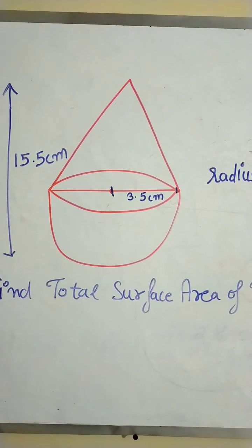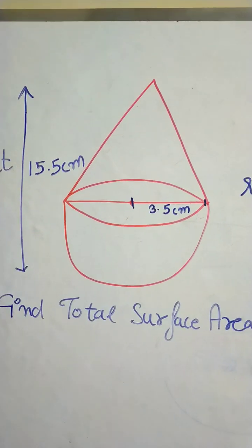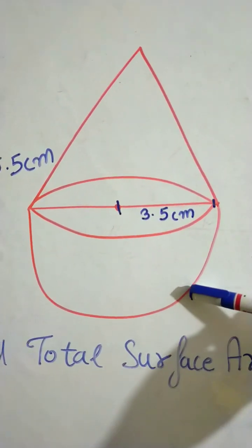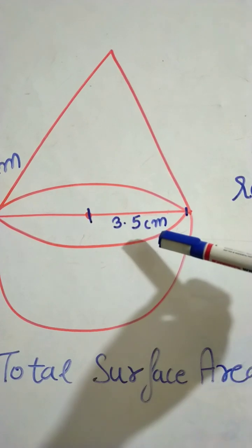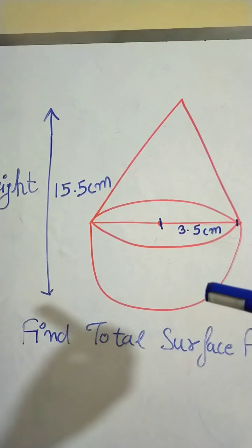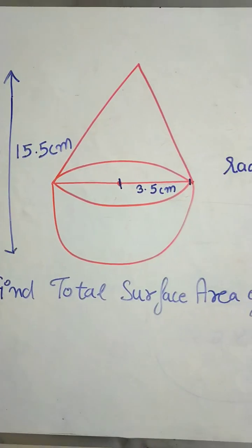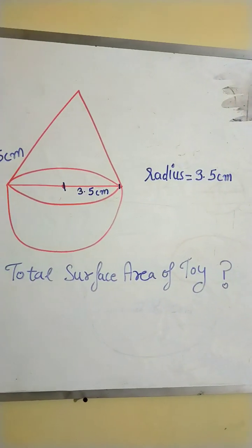Hello students, we are given a toy in the form of a cone mounted on a hemisphere with radius 3.5 cm and the total height of the toy is 15.5 cm. Find the total surface area of the toy.